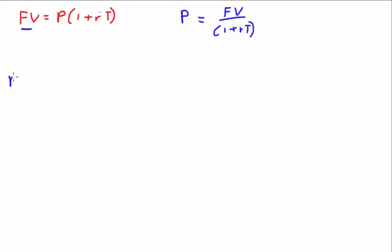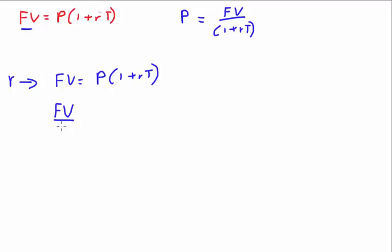Now let's find the simple interest rate — that will take more than one step. Starting from FV = P(1 + RT), first move P over: FV/P = 1 + RT. Then move the one over: FV/P − 1 = RT. Now I want to pause here.